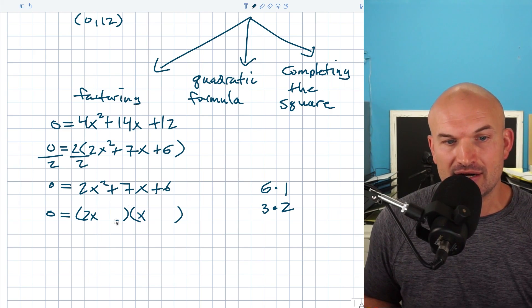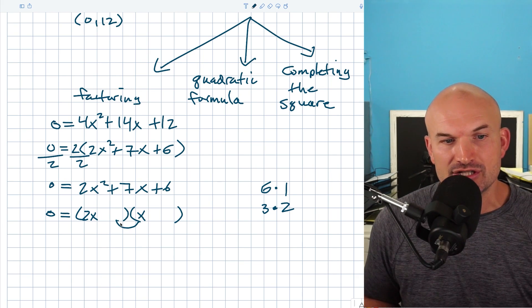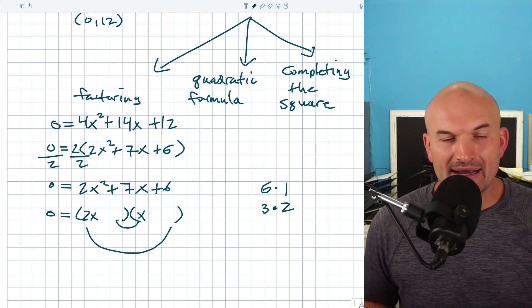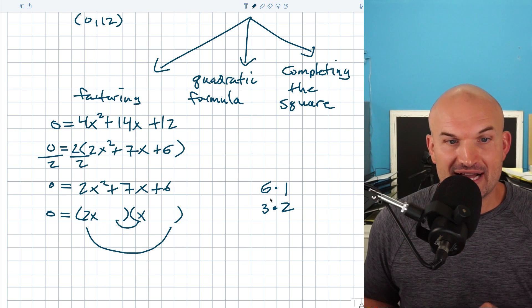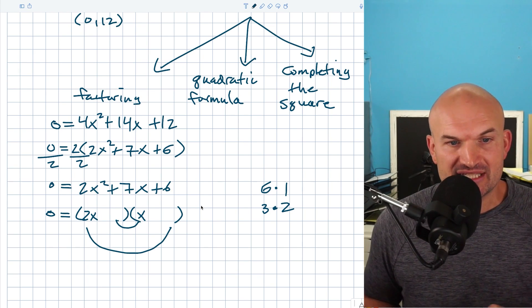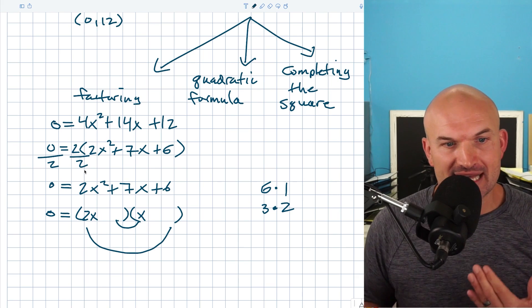And to obtain the 7x here, I'm basically going to be combining the product of my inner terms as well as my outer terms. So I've got to think like 2x times one of these factors plus x times one of these factors needs to add to 7x. So is there anything that's kind of working?